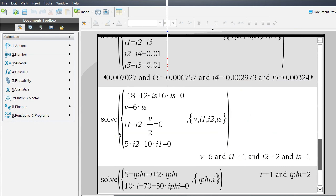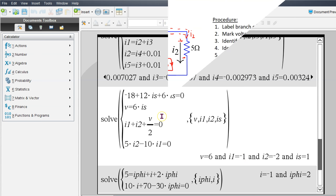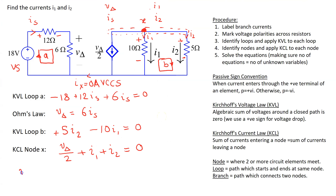We can solve these equations using a scientific calculator. By entering these equations and using the solve command, the solution can be obtained. Note that if we obtain a negative value for a current, this means that in reality the current is flowing in the opposite direction. Using the calculator we find: v_delta = 6 volts, i1 = −1 amp, i2 = −2 amp, and i_s = 1 amp.